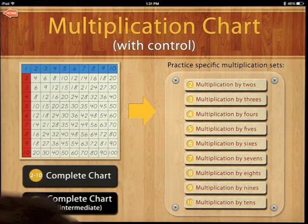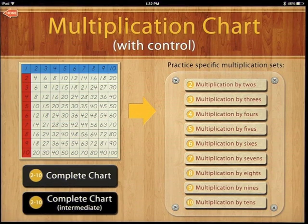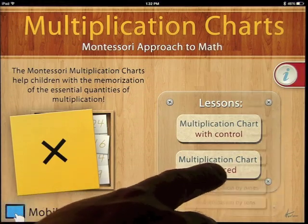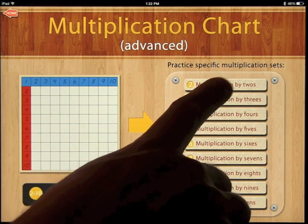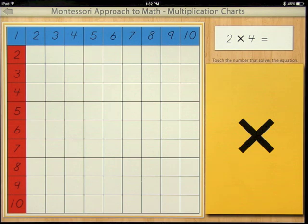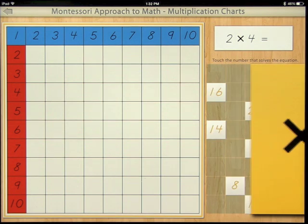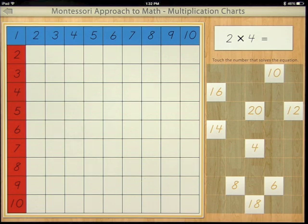Now if we go back out and we go into the advanced level, we don't get any help. So let's go ahead and just start with the twos. 2 times 4 equals...